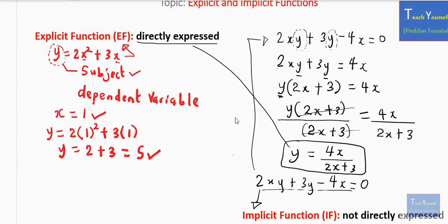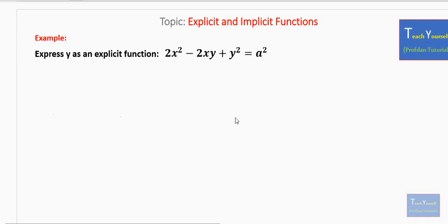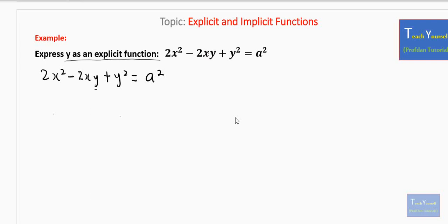Let's look at a worked example: express y as an explicit function given 2x squared minus 2xy plus y squared equals a squared. Our target is y. We can rearrange this as y squared minus 2xy plus 2x squared minus a squared equals 0. Since our focus is on variable y, the power of y in the first term is 2, in the second term is 1, and the remaining terms have no y.